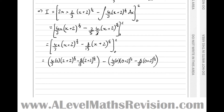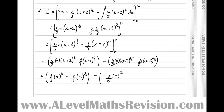Simplifying: 4 times 2 is 8 over 3, then 4 to the 3 over 2 — the square root of 4 is 2, 2 cubed is 8 — so we get 8 thirds, which gives 64 thirds. Then 4 to the 5 over 2: the square root of 4 is 2, so 2 to the 5 is 32. The zero term cancels. Then we have minus 8 fifteenths times 2 to the power of 5 over 2.